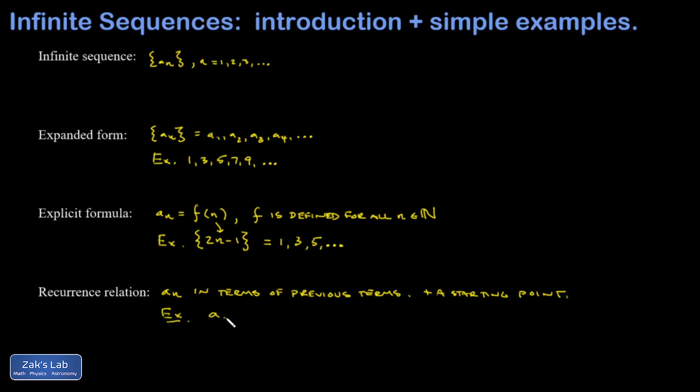For example, I could say a sequence is generated by the recurrence relation a_n equals a_{n-1}, in other words the previous term, plus two, together with the starting point a1 equals one.